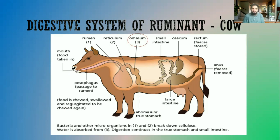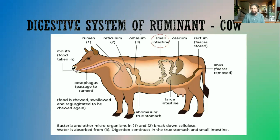As we go through the digestive system of the ruminant, you should compare it to the digestive system of humans, which you will study in biology or human and social biology. The first structure of the small intestine is the duodenum, and in the duodenum more enzymes are released which continue the digestion of proteins, carbohydrates, and fats. This is similar to digestion seen in other mammals.